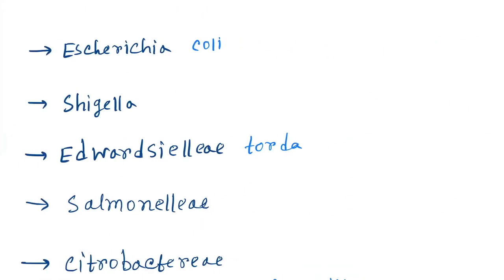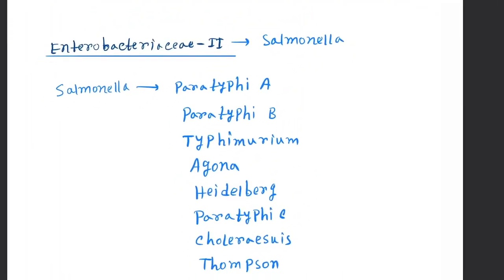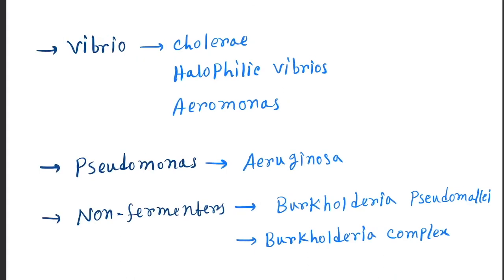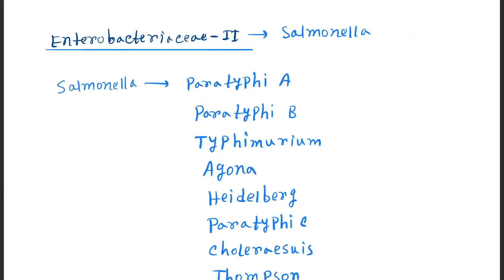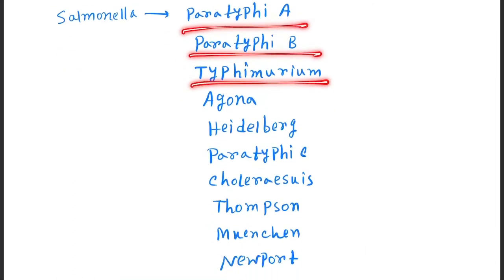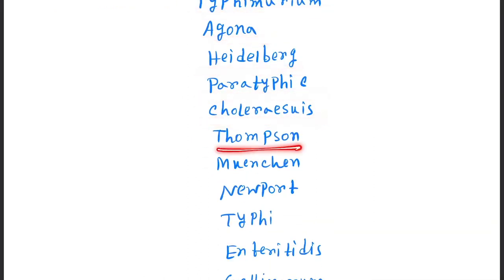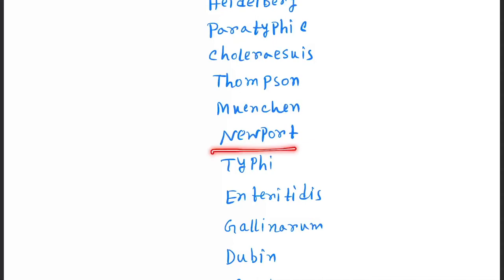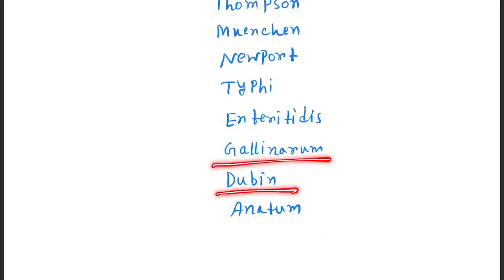Now come to the Enterobacterium 2: Salmonella, Vibrio, Pseudomonas, non-fermenters, and Haemophilus. So Salmonella: Paratyphi A, Paratyphi B, Typhimurium, Agona, Heidelberg, Paratyphi C, Choleraesuis, Thompson, Muenchen, Newport, Typhi, Enteritidis, Gallinarum, Dublin, and Anatum.